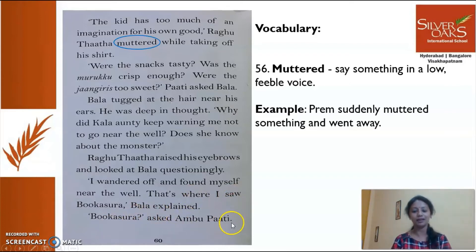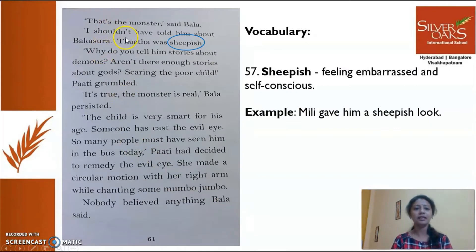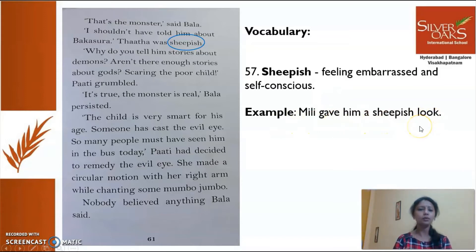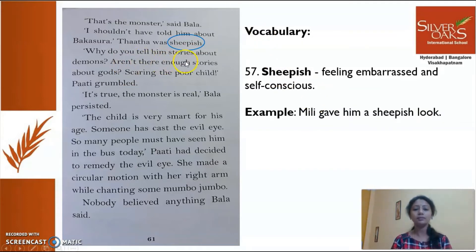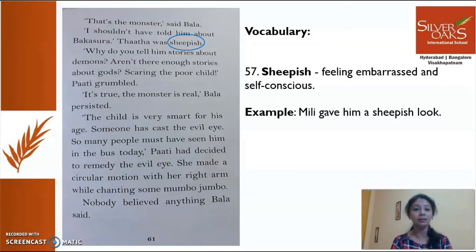'Bukasara?' asked Ambupati. Let's move on to page number 61. 'That's the monster,' said Bala. 'I shouldn't have told him about Bakasura,' Tata was sheepish. There's a new word: 'sheepish' means feeling embarrassed and self-conscious. Example: 'Mili gave him a sheepish look.' Ragutata felt so embarrassed about telling Bala the Bakasura story. 'Why do you tell him stories about demons? Aren't there enough stories about gods, scaring the poor child?' Patty grumbled.